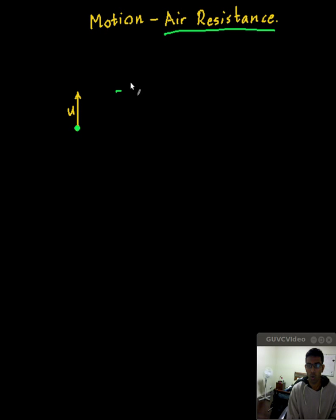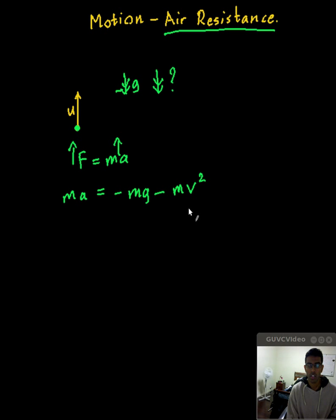We know that there is a downward force caused by gravity, so there's a downward acceleration. But this time there is also going to be air resistance, which means it's going to be acting downwards as well. Force equals ma, so mass times acceleration is equal to minus mg, and air resistance is going to be minus m times velocity squared.